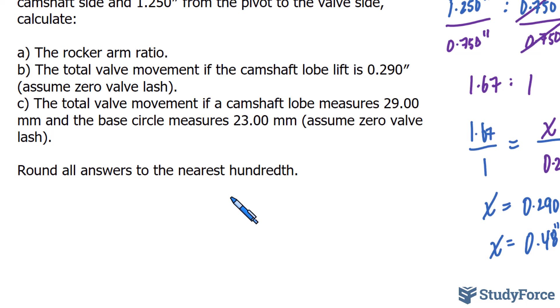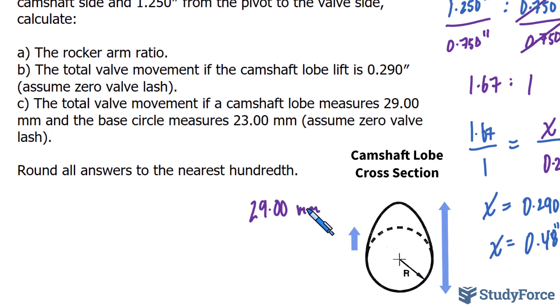And so here we're told that the entire camshaft lobe is 29.00 millimeters and the base circle is 23.00 millimeters. We performed this exact same calculation in that previous video. If we subtract these two values, we get 6.00 millimeters.